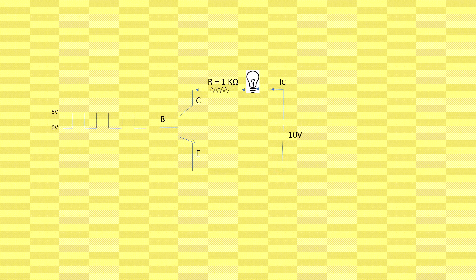The waveform applied at the base is a pulse waveform. It has two values: either it can be low, that is 0 volts, or it can be high, that is equal to 5 volts. When the pulse is at low level, the bulb is off, because no signal is connected at the base, so IB is 0. When IB is 0, IC is 0, and when IC is 0, no current flows through the bulb, so the bulb is off. That is what is known as cutoff.